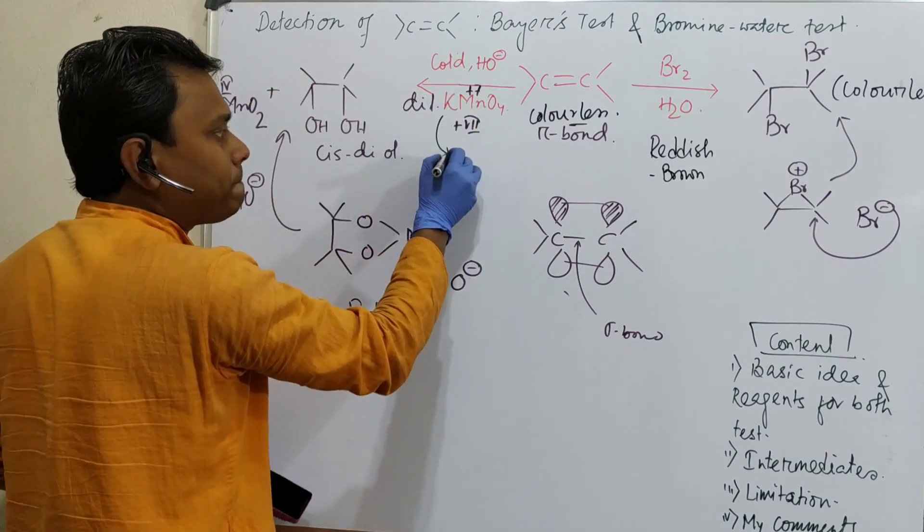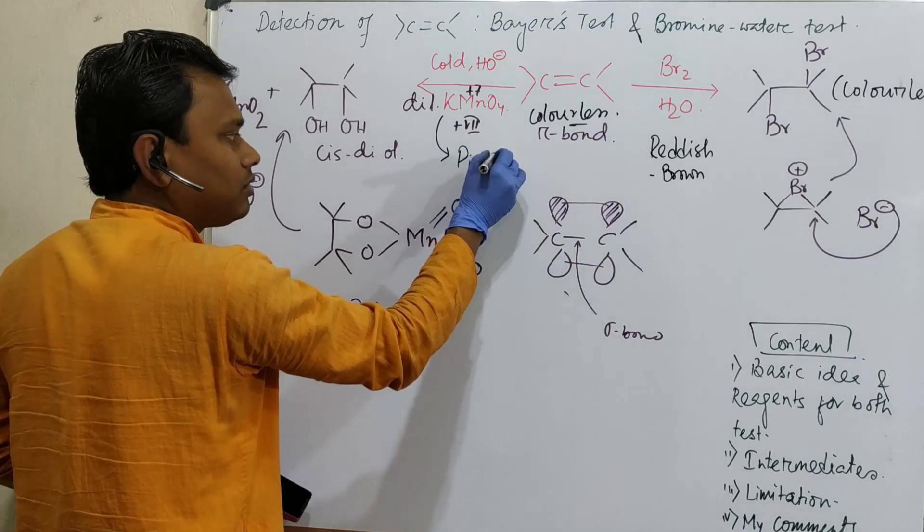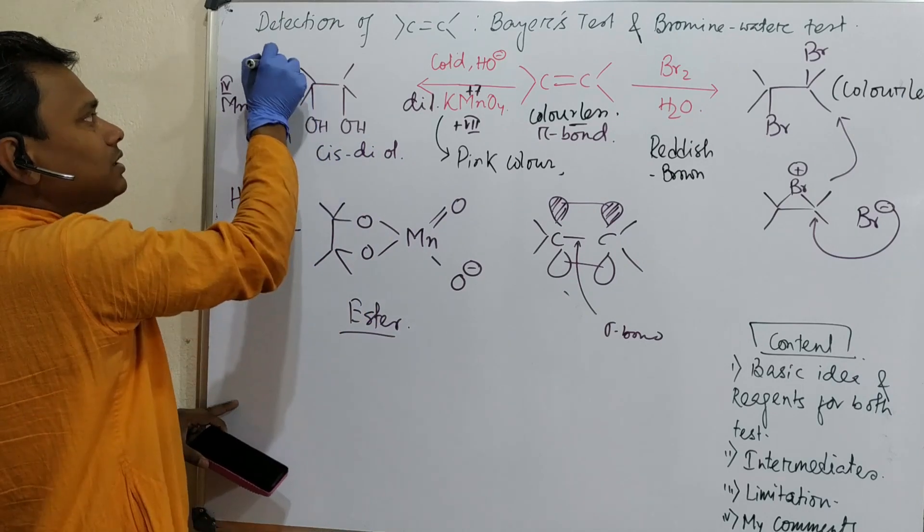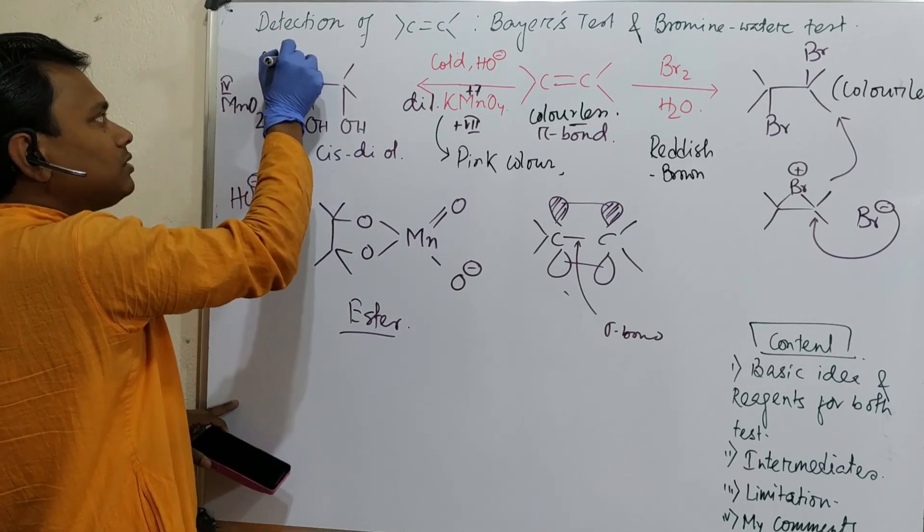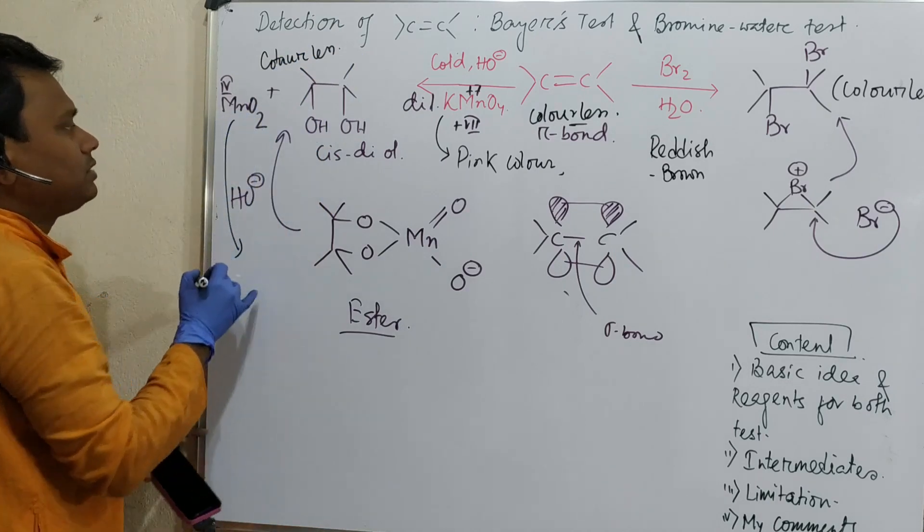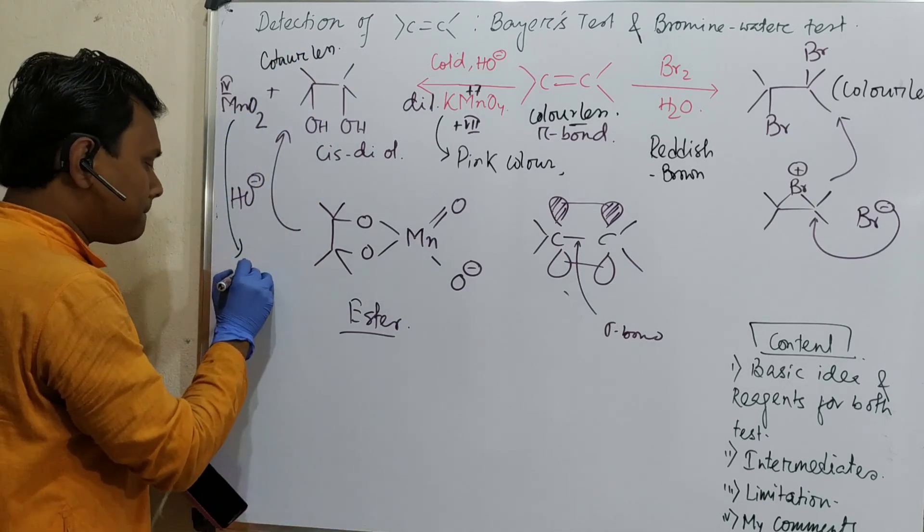Here, KMnO4 is a pink color. The diol is colorless. But one thing, this MnO2 is not colorless. These are black particles.